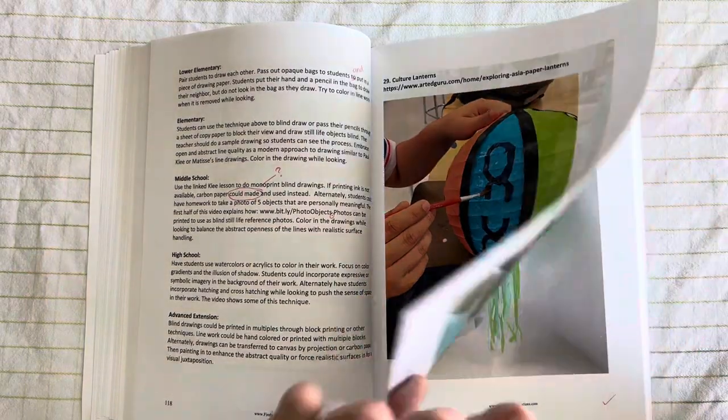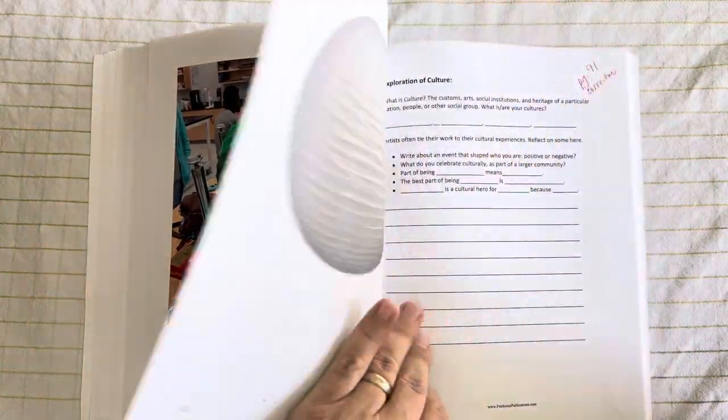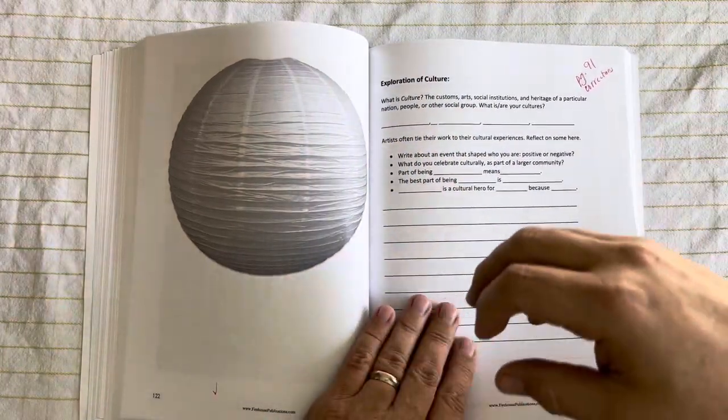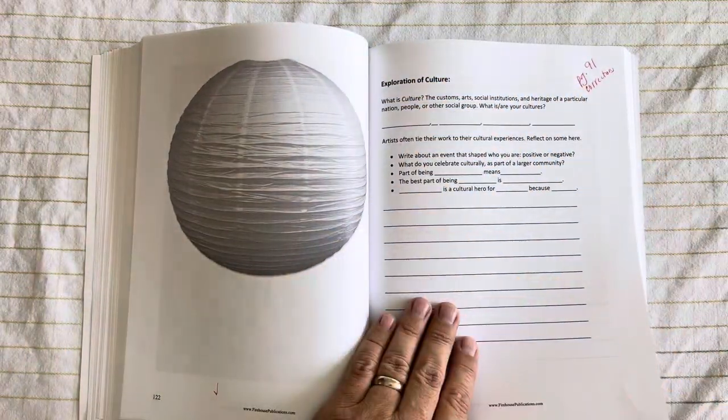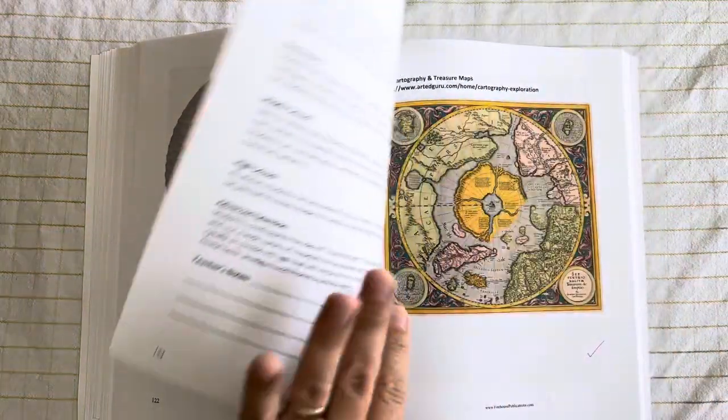Paul Klee Printing and Blind Printing. We have some interesting lessons there. And blind drawing, creating lanterns based on cultures. And then our younger kids can take this handout and then decorate and design a lantern for their own culture.